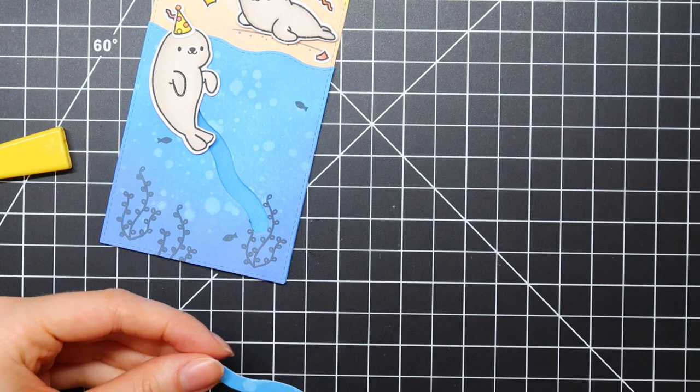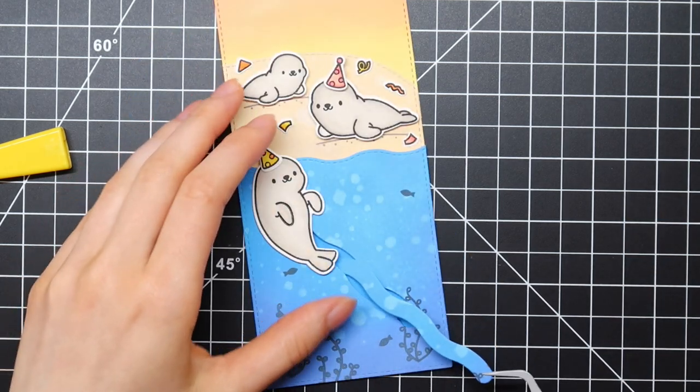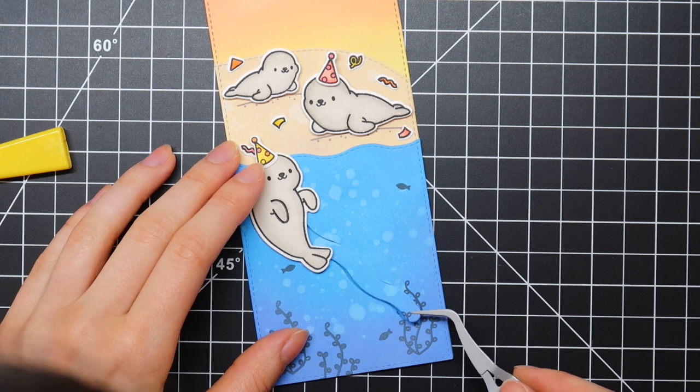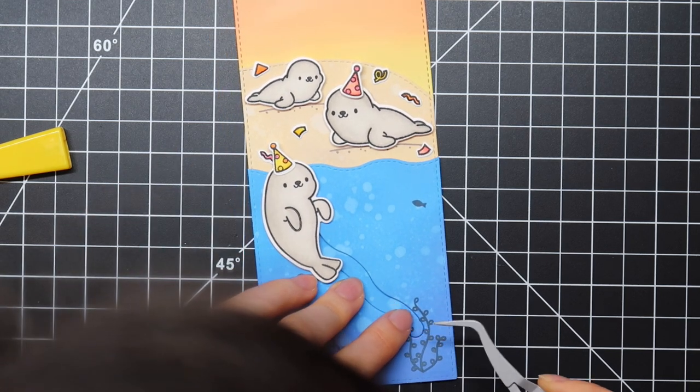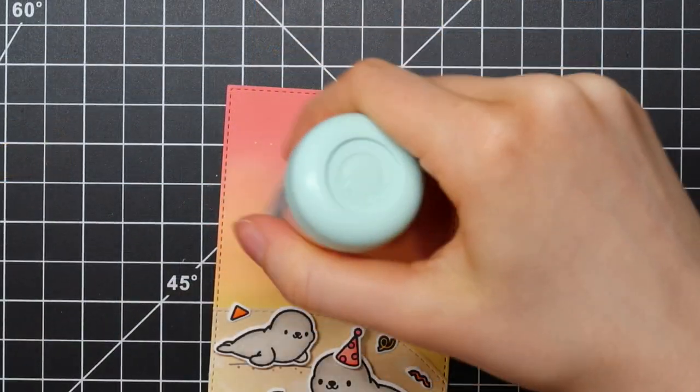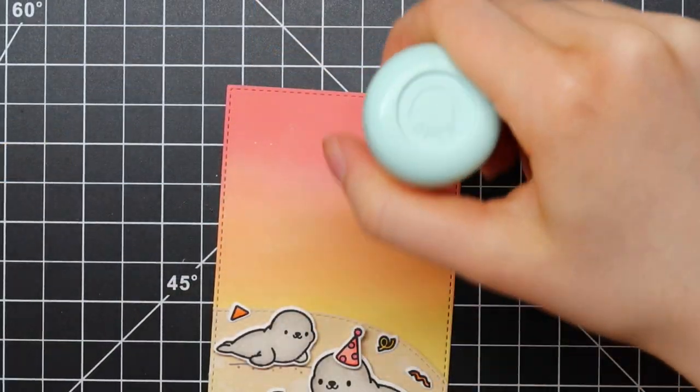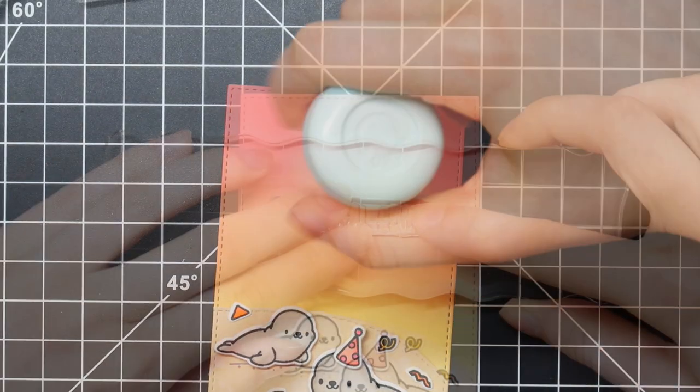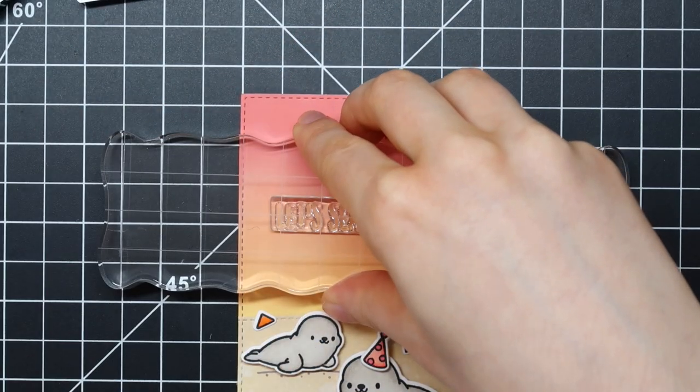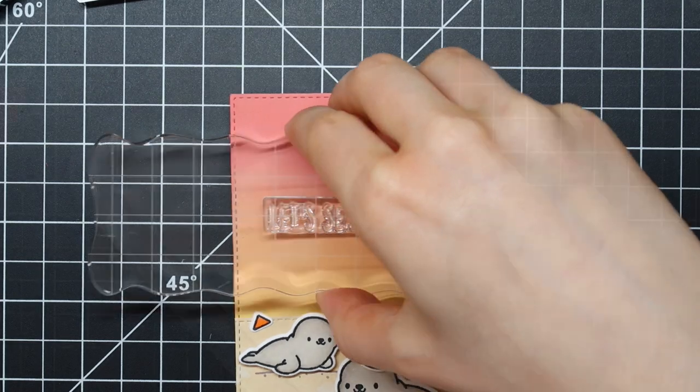Since I die cut my slider piece right where that seaweed was, I saved the positive piece of the slider. And I just used some double-sided adhesive to adhere that right behind my slider seal. So now it all looks like it's one part.